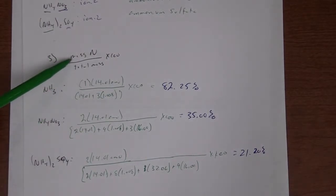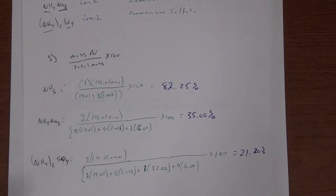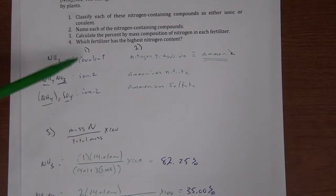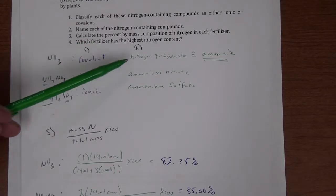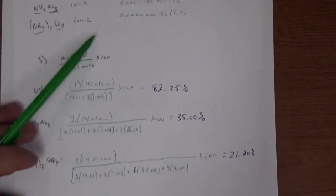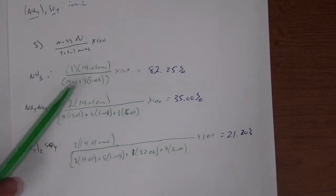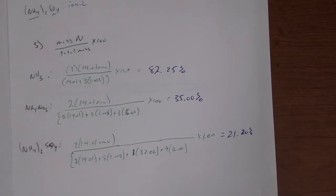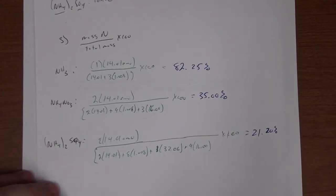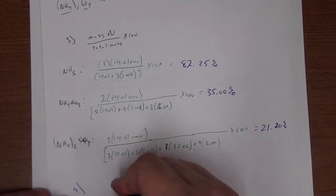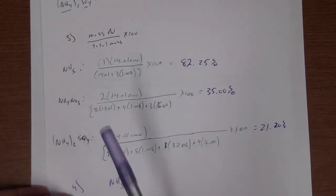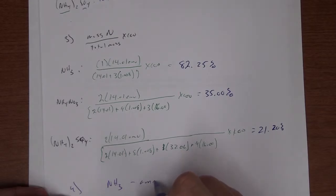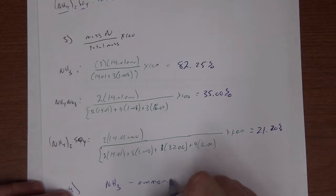So the percent by mass is the mass of the target element divided by the total mass times 100 to make it a percent. The last question of this part asks which fertilizer has the highest nitrogen content. Looking at our values, NH₃ has the largest percent by mass — 82.25% — so ammonia has the highest nitrogen content.